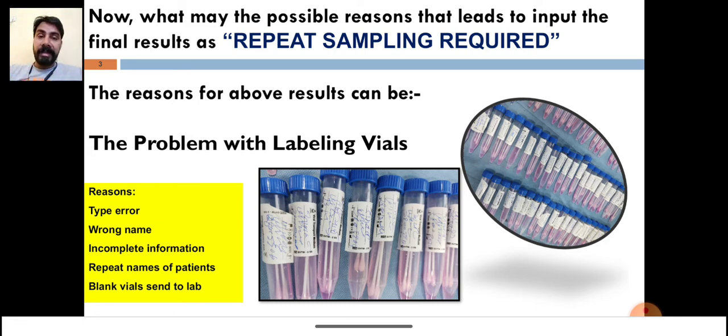This is the problem: typo error, wrong name. For example, there are four patients with the same name and they put the same name on four vials and send them to the lab. How will the lab differentiate? Incomplete information on the vials, repeat names of patients, even sometimes blank vials are sent to the labs for testing.